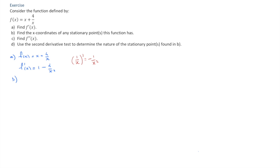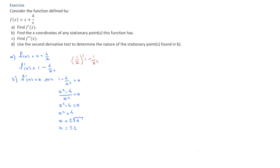For question B, we find the x-coordinates of any stationary points by solving f'(x) equals 0. This equals 0 if and only if 1 minus 4 over x squared equals 0. Multiplying throughout by x squared gives x squared minus 4 over x squared equals 0, so the numerator must equal 0: x squared minus 4 equals 0, leading to x squared equals 4, and therefore x equals plus or minus 2. So this function has two stationary points, at x equals negative 2 and x equals 2.